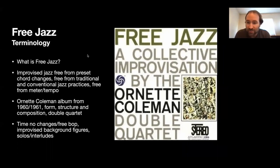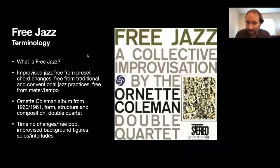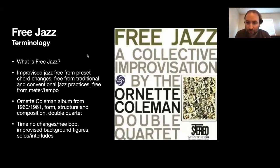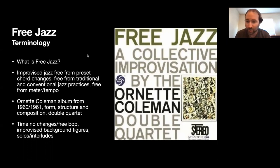The original recording features a double quartet with two horn players on both quartets, two bass players, and two drummers. The form and structure features an in-head melody statement, then solo, interlude, solo, interlude, solo throughout the whole piece. Using conventional jazz practices, it goes through all four horn solos first, then the bass solos, then the drum solos — the standard traditional jazz practice of a solo form going down in score order.